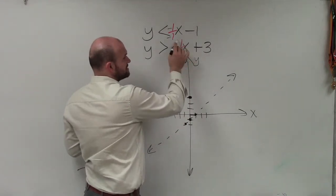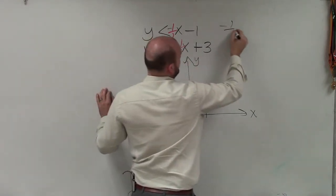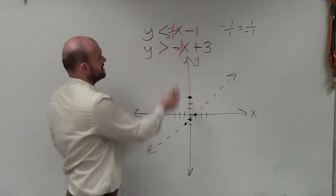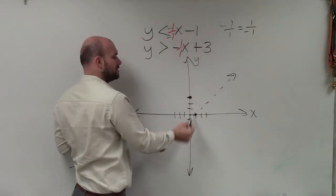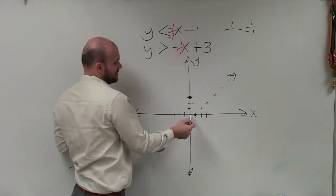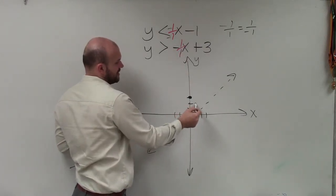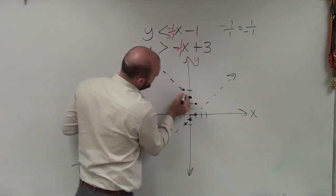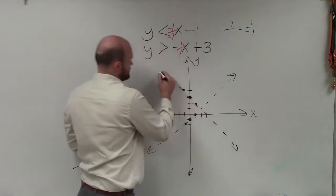But now my slope is negative 1 over 1. Well, negative 1 over 1 is the same thing as 1 over negative 1. All right? So it doesn't matter which one I want to do. Just like the positives, I could go up and over. I could go down and to the left. Here, I could go from here. I can go down and to the right, or I could go up and to the left. But again, still, you're going to see we're going to have a dashed line.